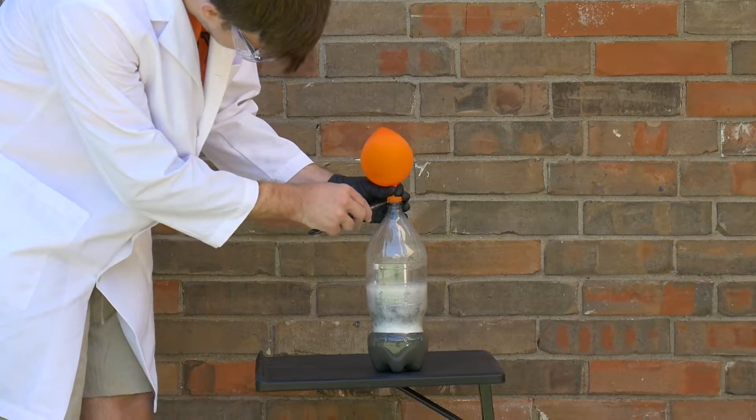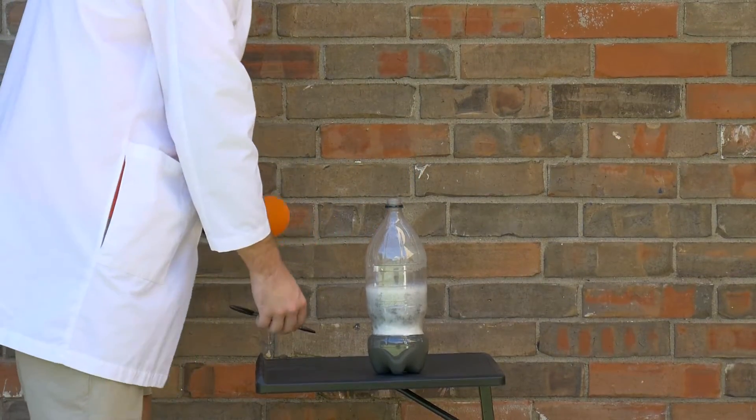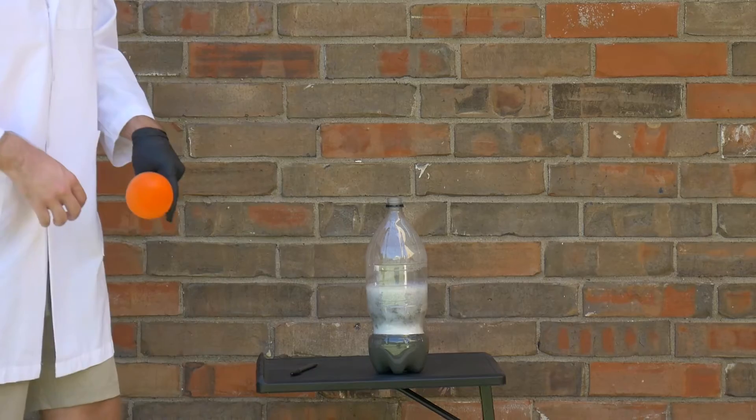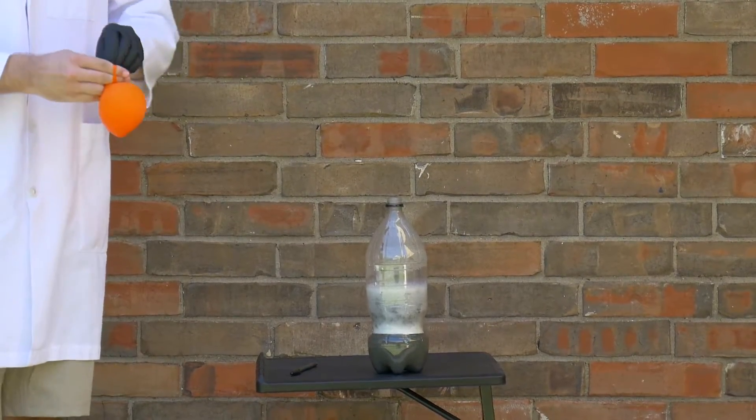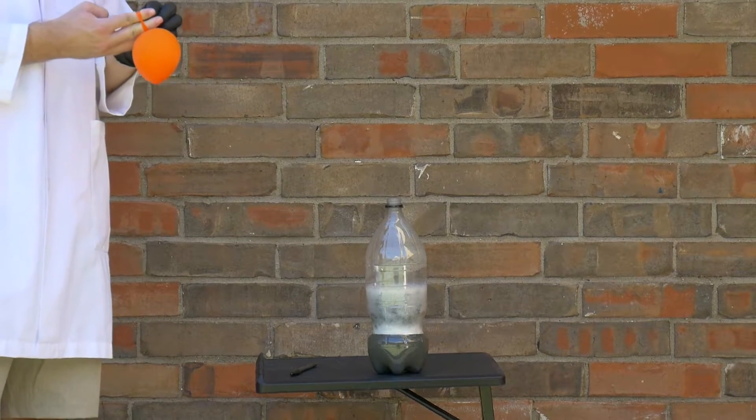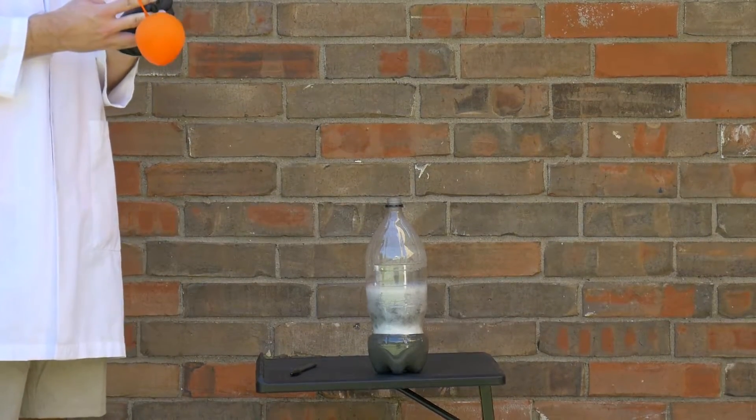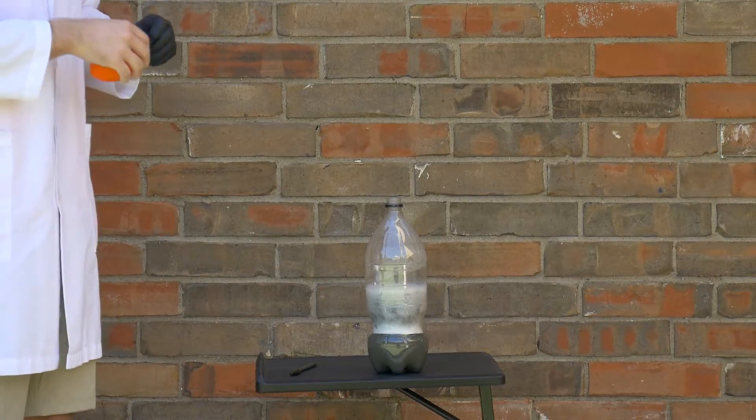At this point I elected to take the balloon off the bottle. It's much smaller than you might have noticed moments ago. This is because it either got too hot or the Drano itself melted the edge of the balloon where it contacted the bottle, so it began to leak air basically. So this is when I decided to take the balloon off and see if I could blow this up.